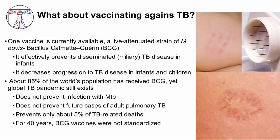BCG has been found to have many problems. It does not prevent infection from MTB, does not prevent future cases of adult pulmonary TB disease, and only prevents about 5% of TB-related deaths. Contributing to these problems is the fact that for 40 years, BCG vaccines were not standardized — different strains were used, leading to widely variable effectiveness, and even the administration was not standardized. A multiple puncture needle was commonly used but produces inferior results compared to intradermal injection.